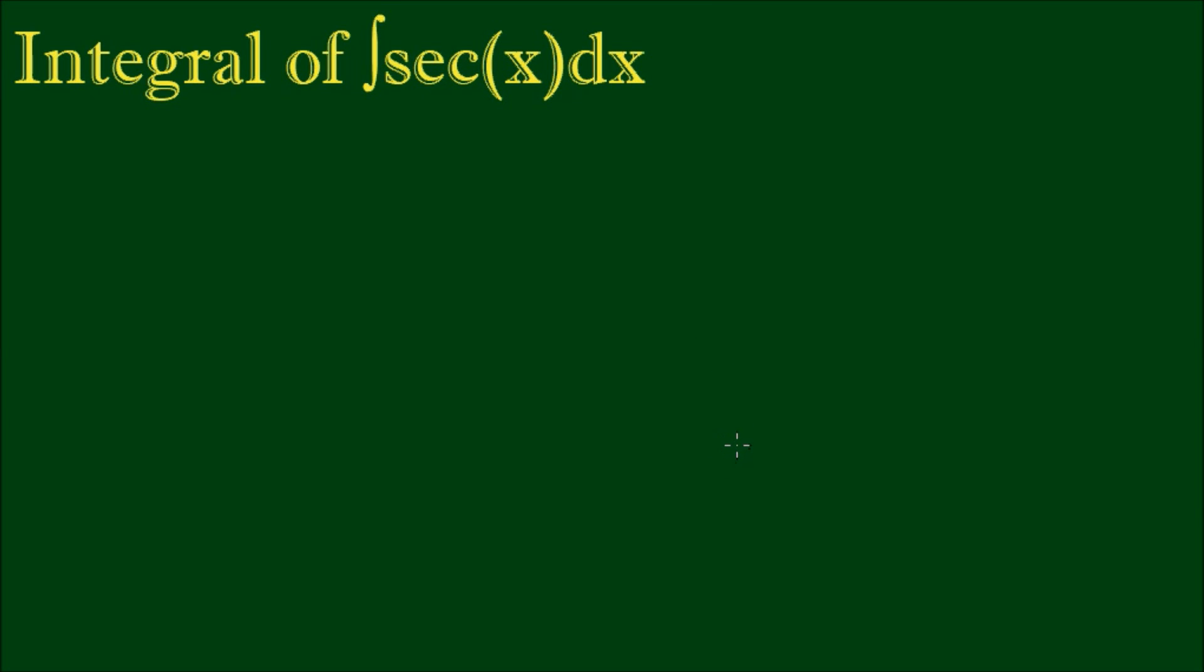So the integration of the secant function. This is a tricky one because if we write the secant of x as 1 over the cosine of x, which is its definition, and we try to integrate...